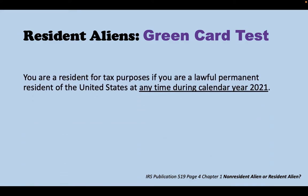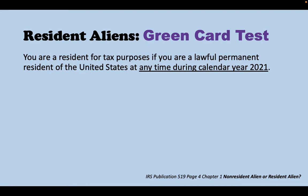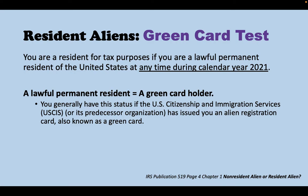For the green card test: you are a resident for tax purposes if you are a lawful permanent resident of the United States at any time during the calendar year 2021. A lawful permanent resident is basically a green card holder — someone who has been issued an alien registration card, also known as a green card, by U.S. Citizenship and Immigration Services. If you are a green card holder, you are considered a resident alien and your income will be taxed worldwide, exactly like a U.S. citizen.